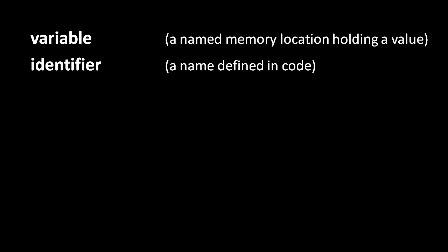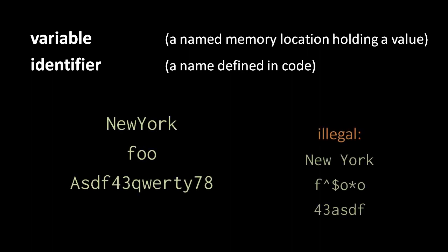Identifiers, though, must conform to a few rules. They can consist of uppercase and lowercase letters, and they can also have numerals in them. However, they cannot have spaces in them, and they cannot begin with a numeral. So these three examples are all valid identifiers, but these other three are not.